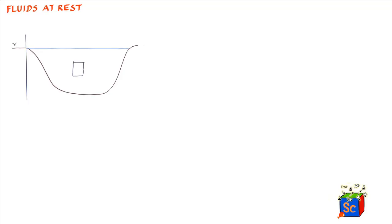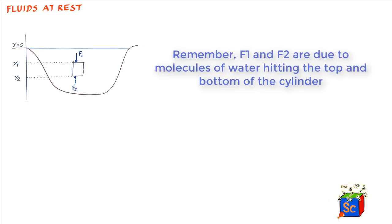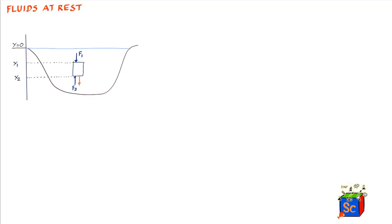Let's say the upper level of the cylinder is at y1, where y equal to zero is the reference, and the lower level is at y2. Now let's examine this as a free body and make a free body diagram. We'll assume there is a force F1 acting on the top of the cylinder and a force F2 acting at the bottom, and we also know that the weight mg acts in the downward direction.